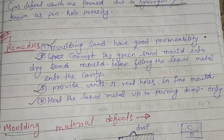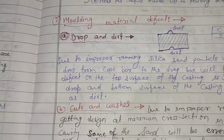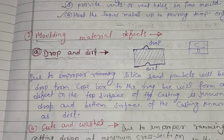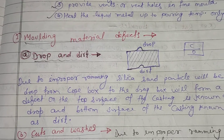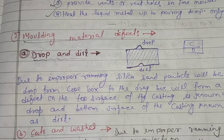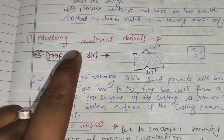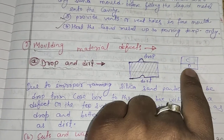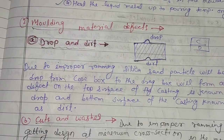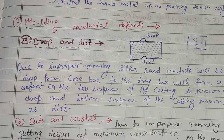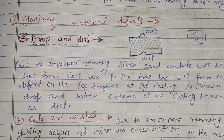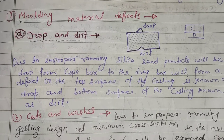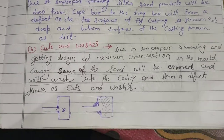The second category is molding material defects — drop and dirt. Due to improper ramming, silica sand particles will be dropped from the cope box to the drag box. The lower box is called the drag box and the upper box is called the cope box. A defect on the top surface of the casting is known as drop, and on the bottom surface is known as dirt.